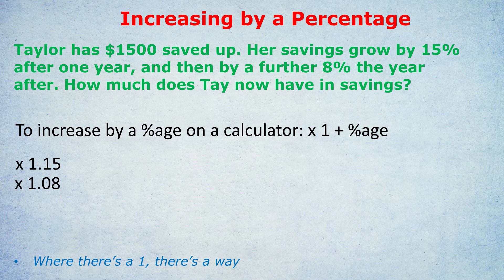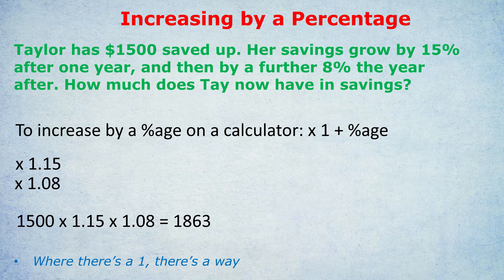So in this example: 1,500 (the original amount) times 1.15 to increase by 15%, times 1.08 to increase by 8%, giving us the final answer of $1,863.